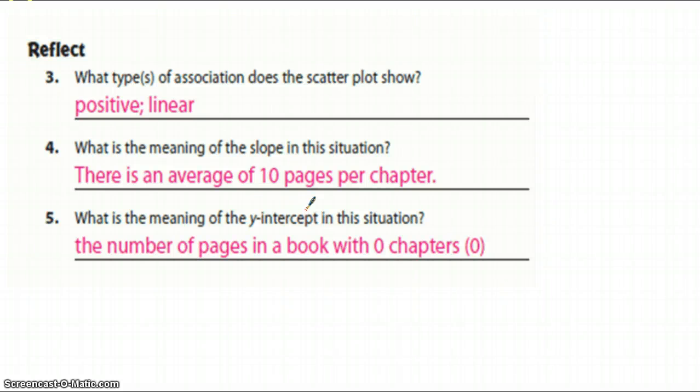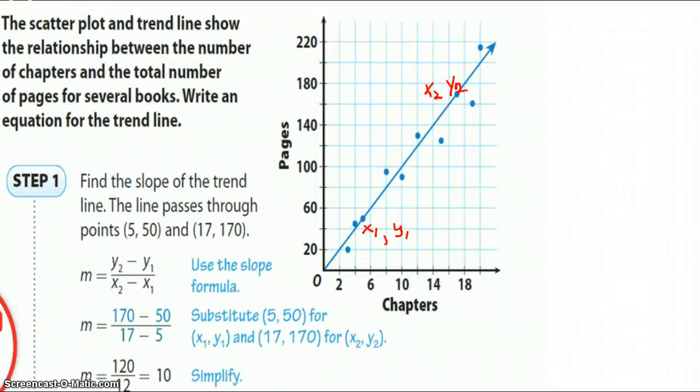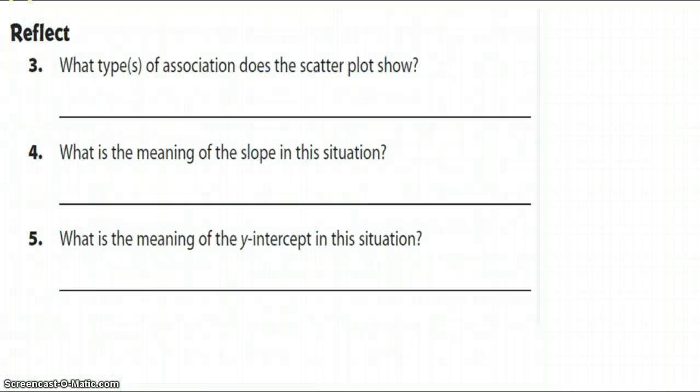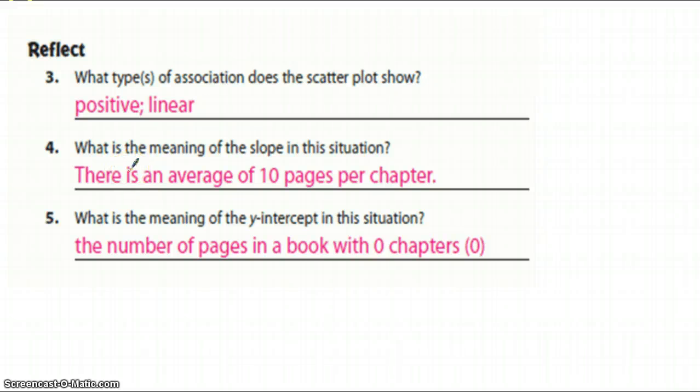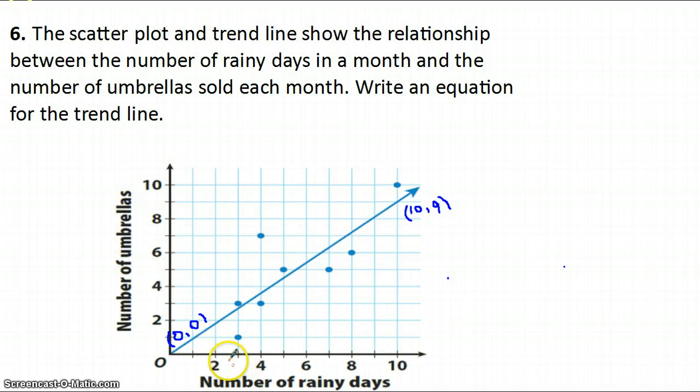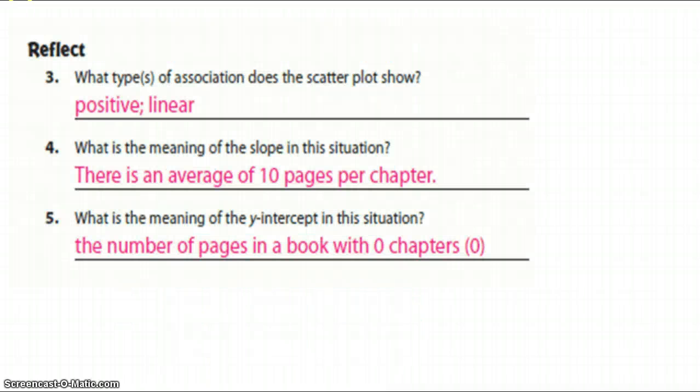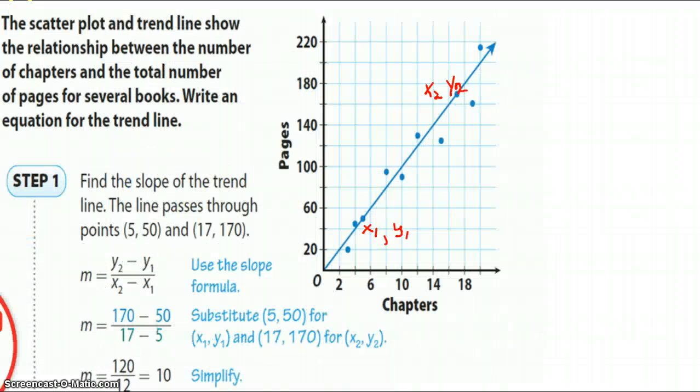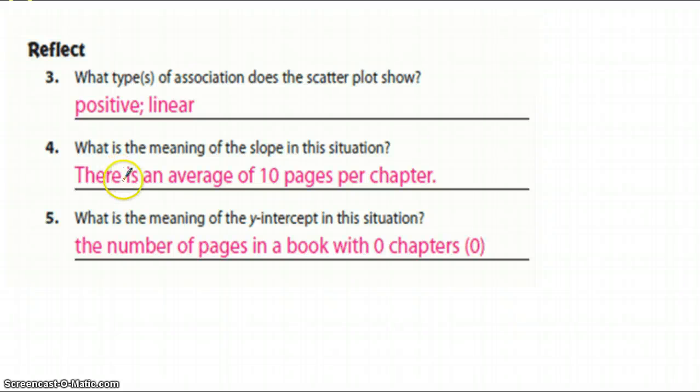Okay. Number 3. What type of correlation, what type of association does the scatterplot show? Well, if we go back and look at it, we're looking at the very first one that we did that's going up and to the right, going up and to the right. So when it goes up and to the right, it is positive, so it's a positive association. If you don't mind, I'm just going back and forth.